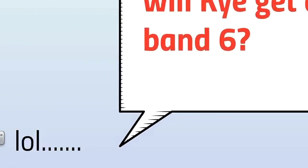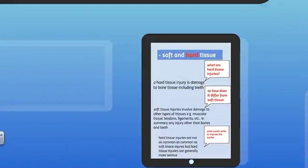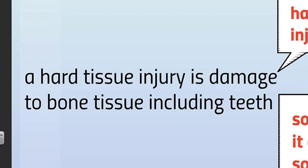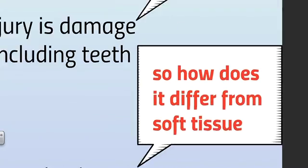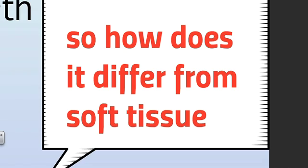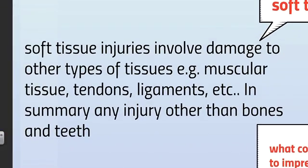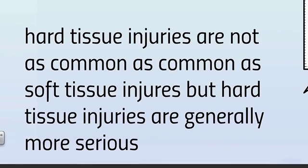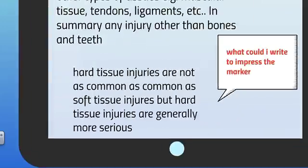Moving on to hard tissue injuries: a hard tissue injury is any damage to bone tissue, and that includes teeth. Soft tissue injuries involve damage to muscular tissue and tendons, whereas hard tissue injuries involve damage to bones and teeth. To impress the marker, you could say something along the lines of: hard tissue injuries are not as common as soft tissue injuries, but hard tissue injuries are generally more serious in nature.